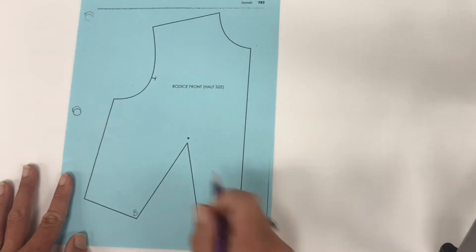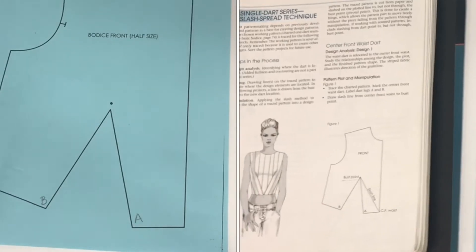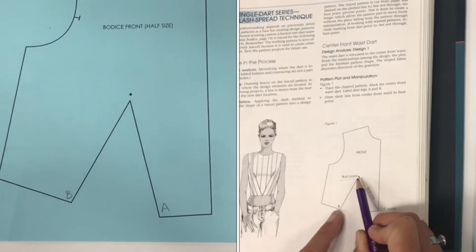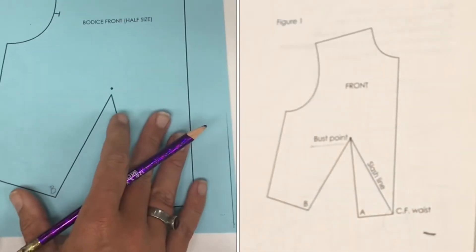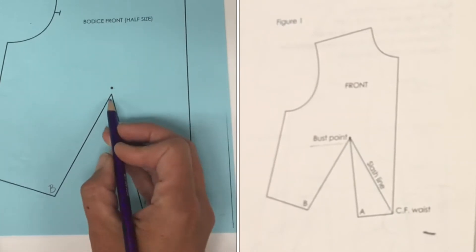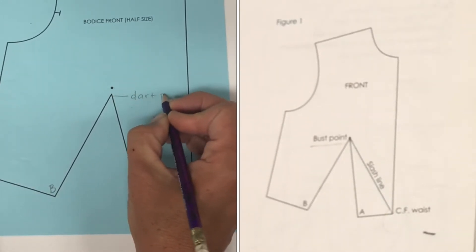Okay, now something to point out in your book, pull up your book right here, actually might be better. B and A is that their dart legs meet at the bust point. This is our bust point. Our dart legs are meeting at the dart point.